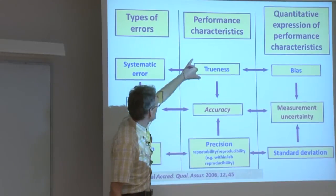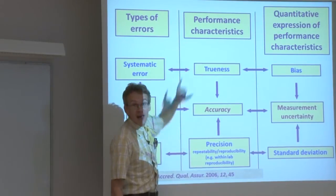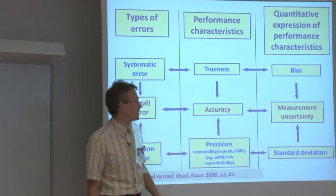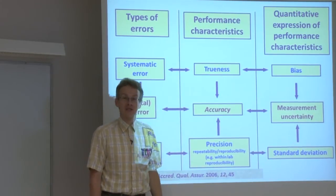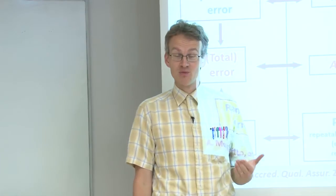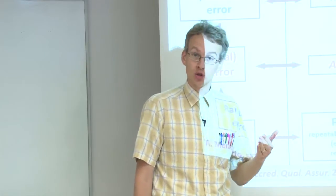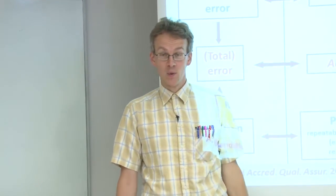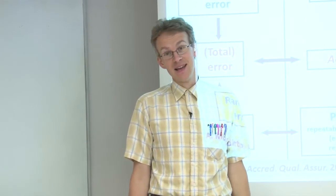And these two, trueness and precision, can be combined into the concept of accuracy. So if a measurement result had good trueness and has good precision, we can say that this measurement result is accurate.